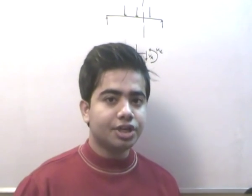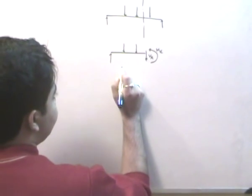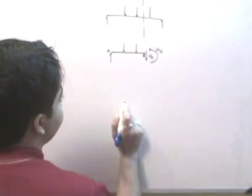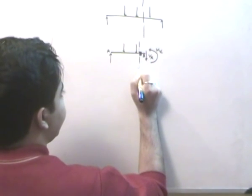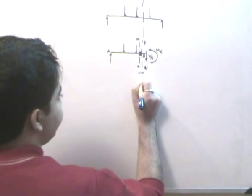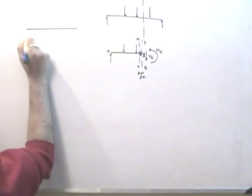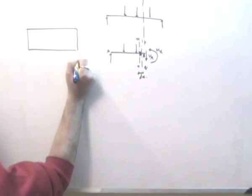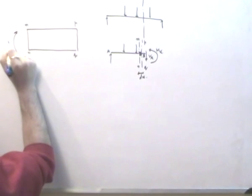The bending moment is a couple created due to bending stresses acting at every cross section, and the shear force is the resultant of the shear stresses created at every cross section. In this lecture we will find the distribution of shear stresses across a cross section. Consider an element of the beam; I cut this plane at M-N and P-Q, where the distance between M-N and P-Q is dx. Magnifying this region, at M-N we have bending moment M, and at P-Q we have M + dM.